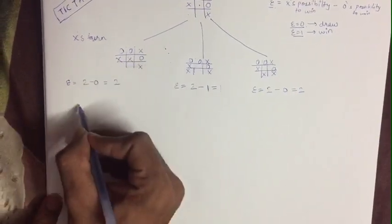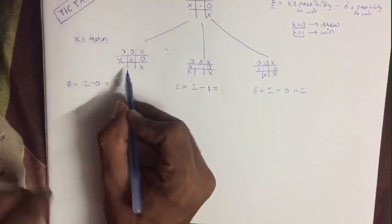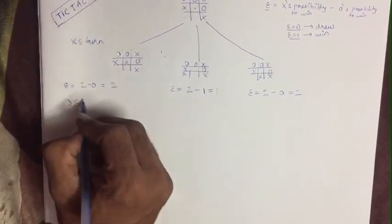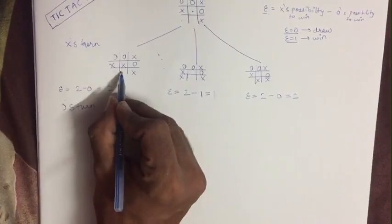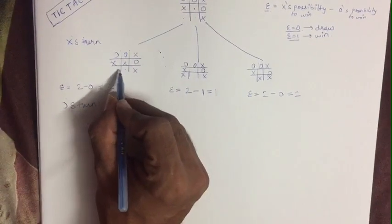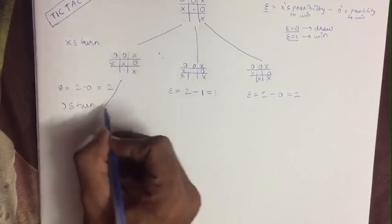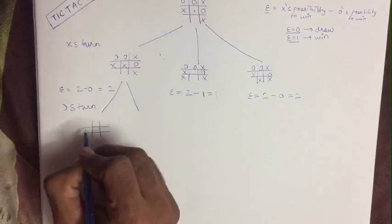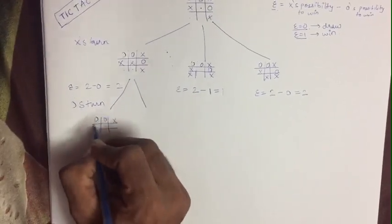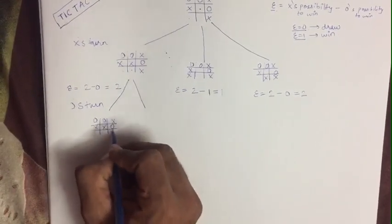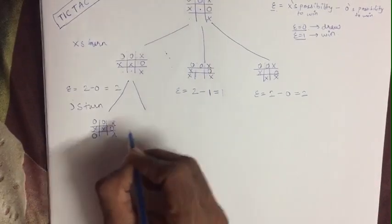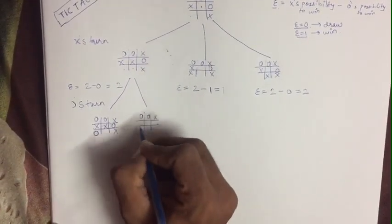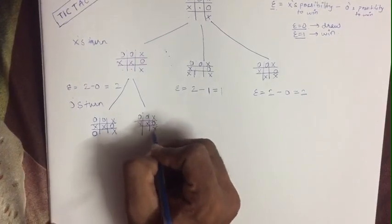Now you have to go ahead. Now it is O's turn. So you can keep O in 2 possibilities, so you have to do 1 and 2. First here, and second over here.